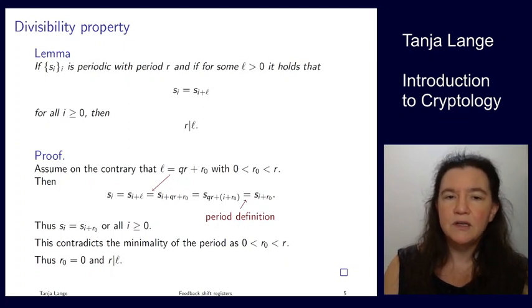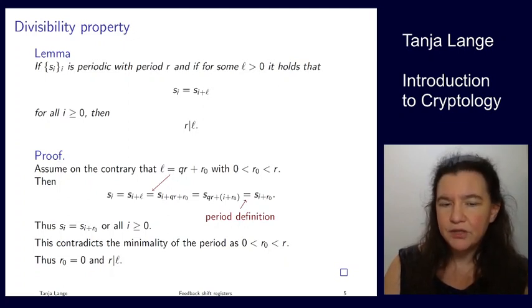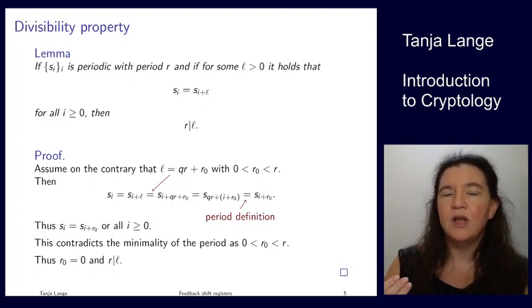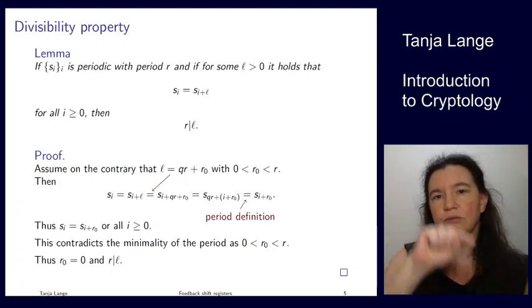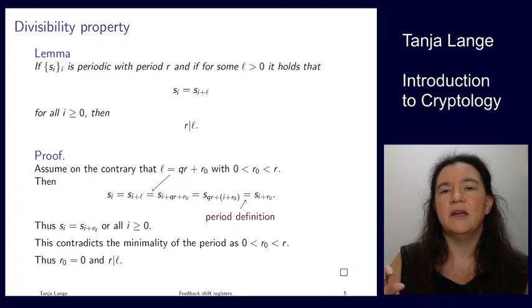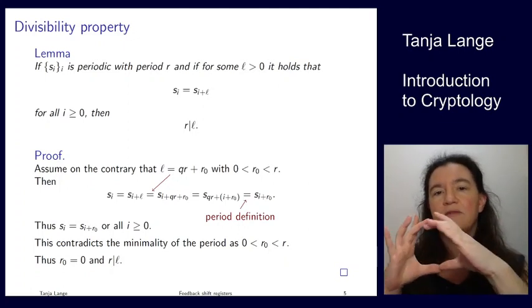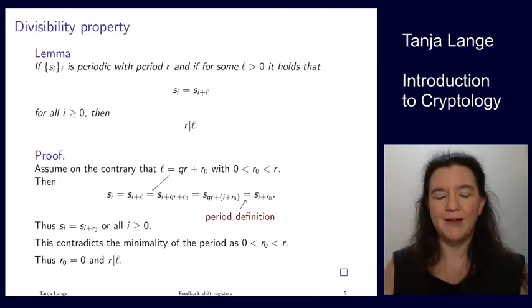So we have now seen the definition of feedback shift registers and a long example of it. And then with this example, we talked about the definition of period, about ultimately periodic functions and the pre-period. And we proved a very important lemma, meaning that if you see something which repeats after a certain number, then the period is a divisor of this length. All right. That's it for now. Thank you for your attention.